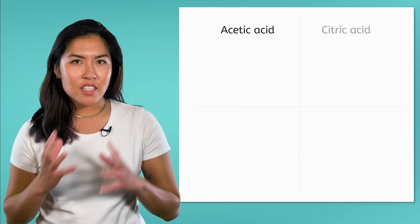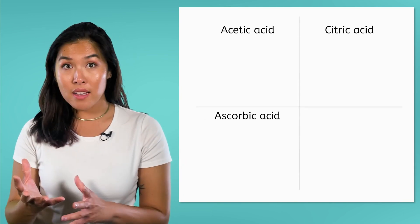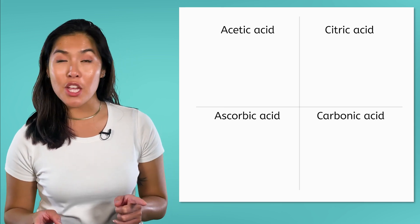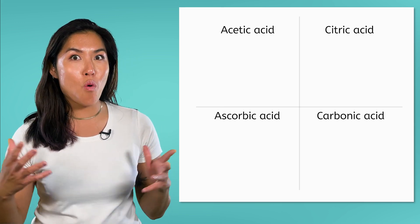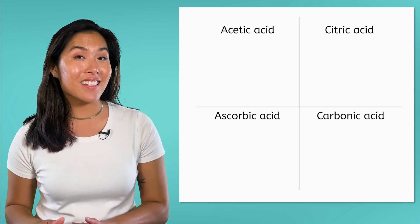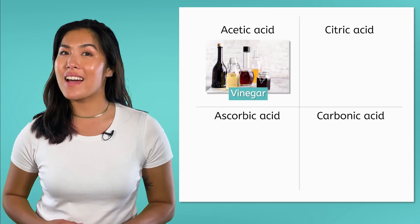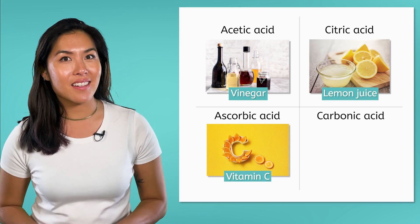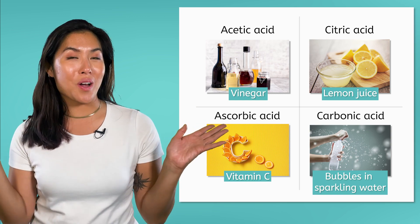Acetic acid, citric acid, ascorbic acid, and carbonic acid. These are all acids that you can probably find in your kitchen. Do you know where? Acetic acid is vinegar, citric acid is lemon juice, ascorbic acid is vitamin C, and carbonic acid causes bubbles in sparkling water.